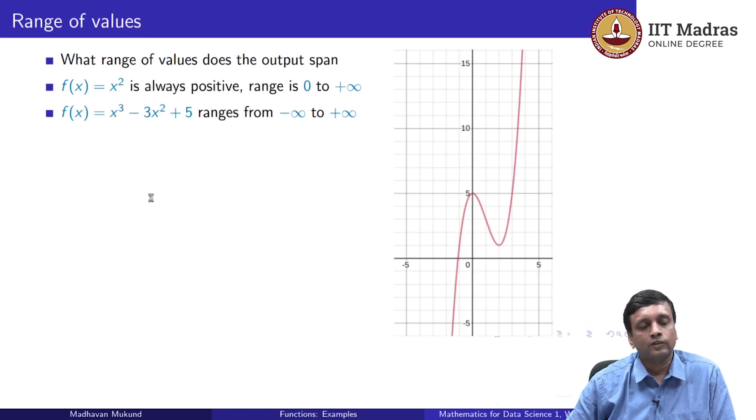On the other hand, if we take a cubic function of this form x³ - 3x² + 5, then when x becomes very small, the x³ becomes very small because the cube of a negative number is a negative number. So a cube of a large negative number, I mean magnitude, say -1000 is -1000 × -1000 × -1000 is -10⁹. So as we go into large negative values, we get large negative outputs, same for large positive values. So this has a range from -∞ to +∞.